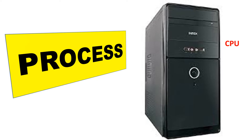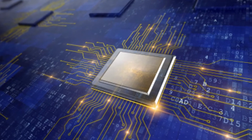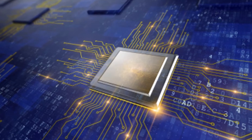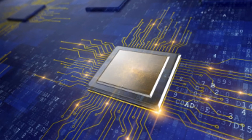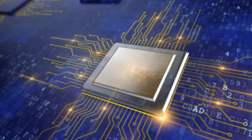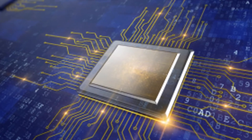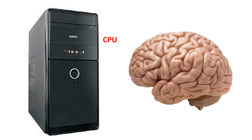Process. The process is done by the CPU. Process means doing some work on the data that we have entered. The CPU does all the thinking and calculations with the data given. The CPU is called the brain of the computer.